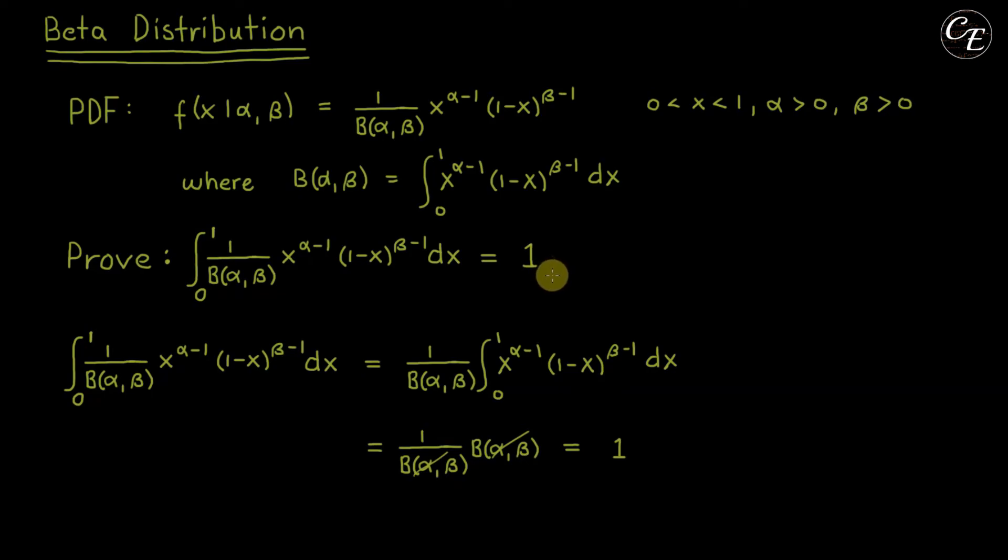So this ends our proof that the integral of the probability density function of beta distribution with limits where its domain is defined is equal to 1.